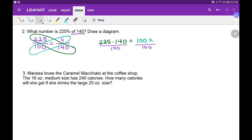And at this point, I'm kind of curious. What's 225 times 140? And the answer is 31,500. That's over 100. And that's equal to X, now that the 100 canceled on the right side.